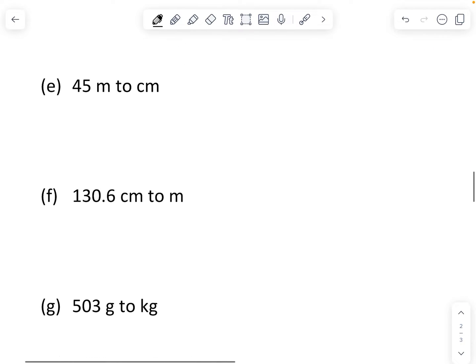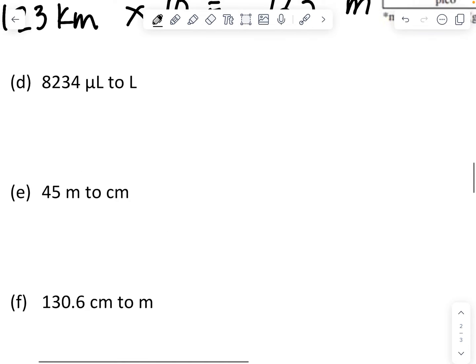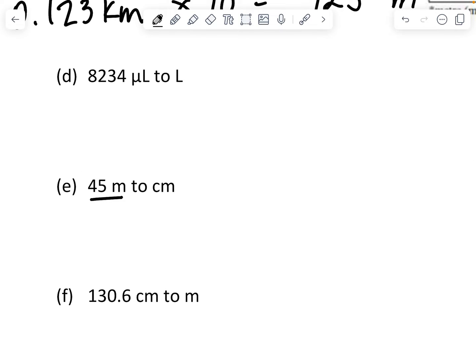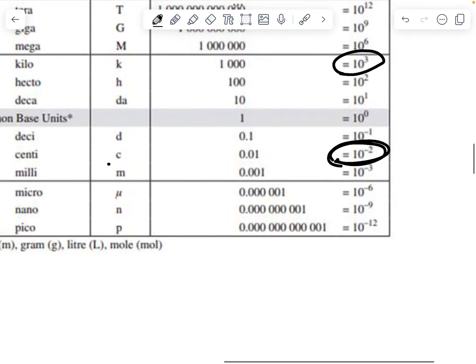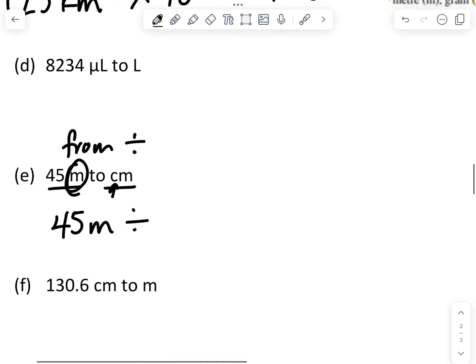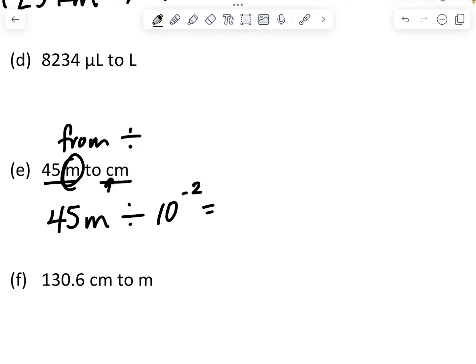If I went, in this case, the meters are my base units. So I'm going from the base units in this case. So I'm going to divide. So I take 45 meters. And I'm going to divide by the number for centis. And we already saw those. But they're 10 to the minus 2. That's what the centis are. So I'm going to divide by 10 to the minus 2. This is going to give me 4,500 centimeters.